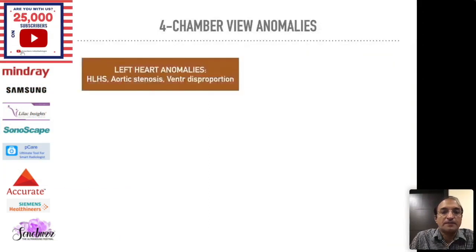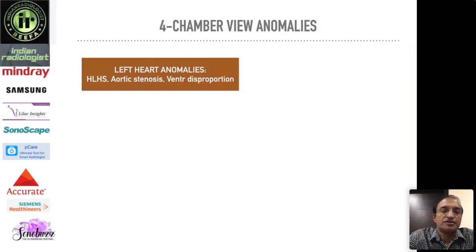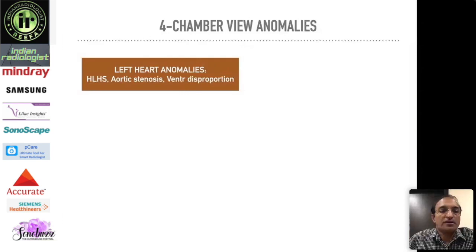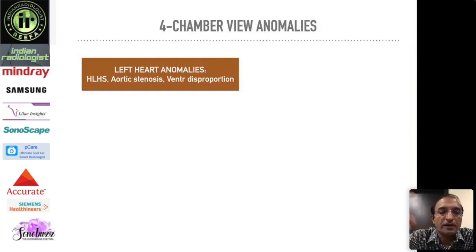When listing four-chamber anomalies, a clear structured approach is helpful. On the left side, the most important and severe anomaly is hypoplastic left heart syndrome. Then there is aortic stenosis, and then an entity called ventricular disproportion or asymmetry, where one ventricle — typically the left — is smaller than the right. We will discuss the differential diagnosis of hypoplastic left heart very soon.